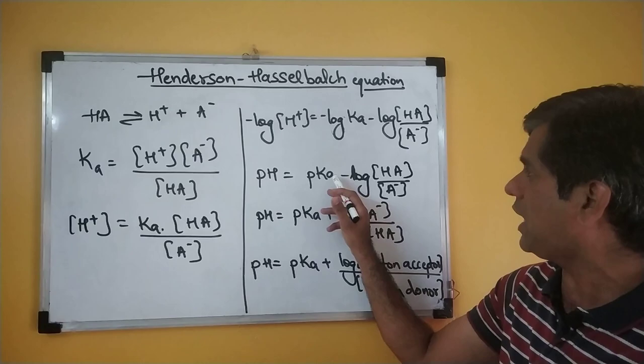Converting negative into positive, we have in general: pH is equal to pKa plus log of the proton acceptor upon the concentration of the proton donor.